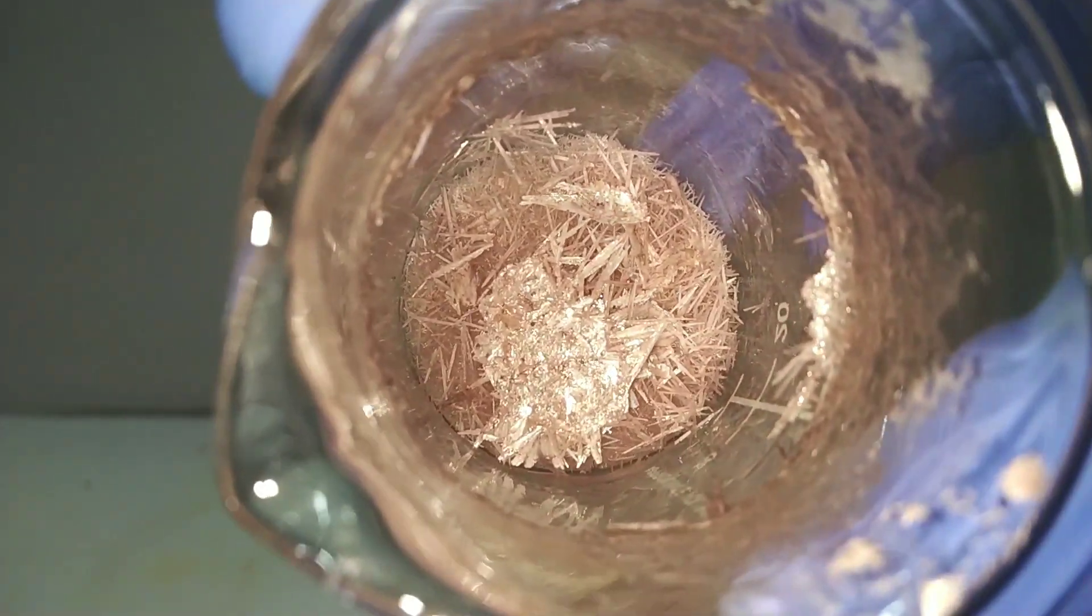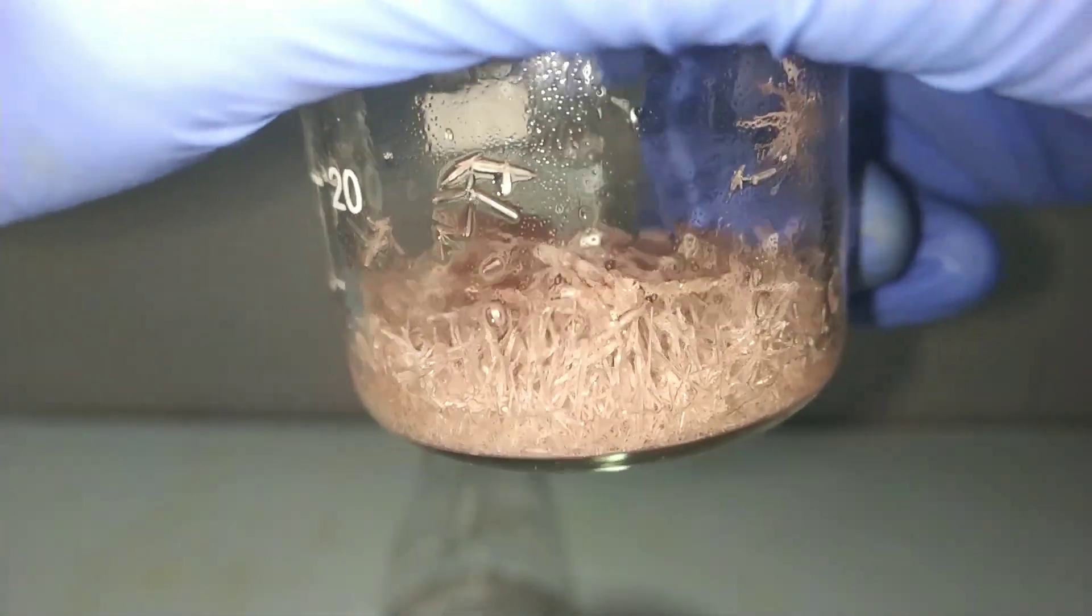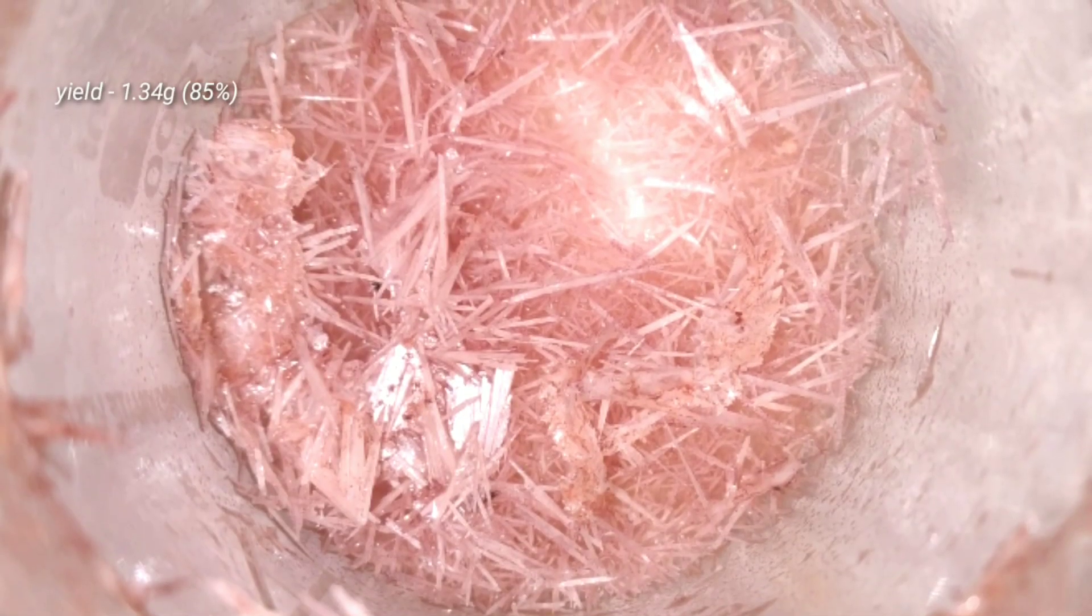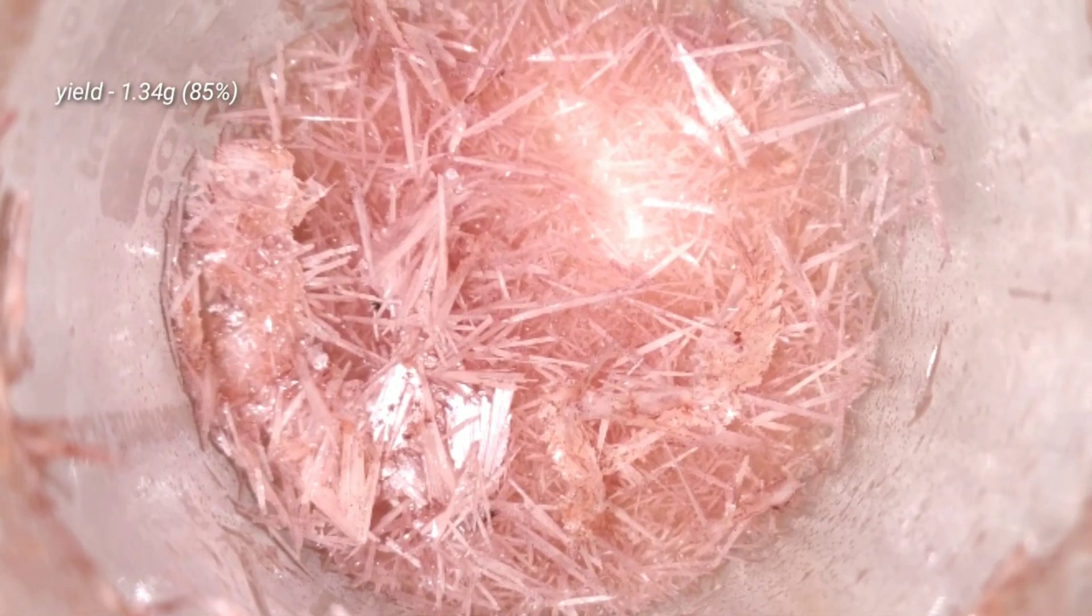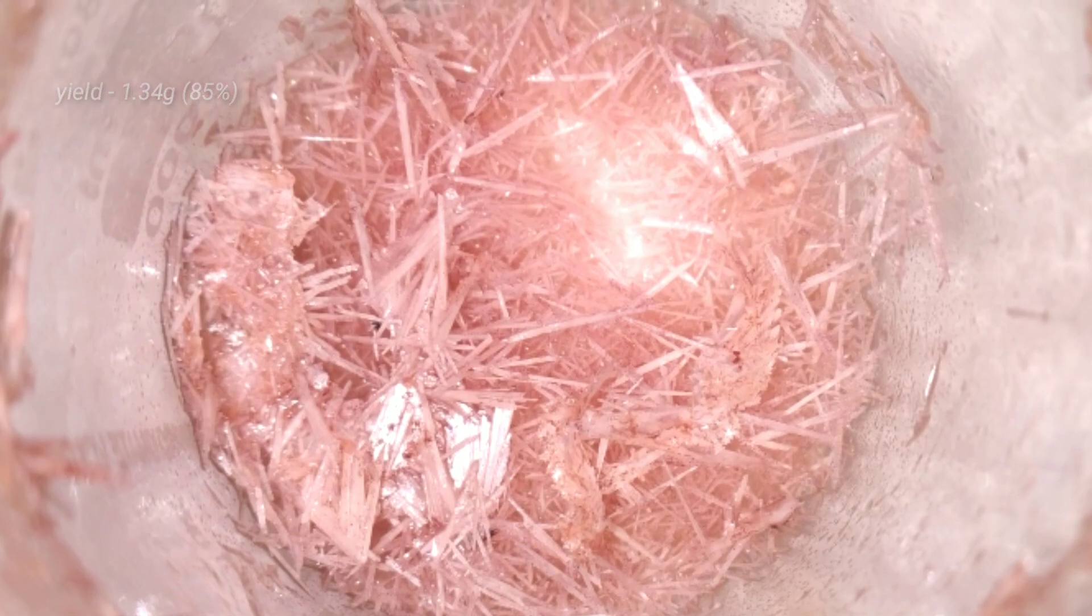And here we have the final product that is the needle shaped crystals of parabromoacetanilide. My yield was 1.34 grams which is about 85% yield.